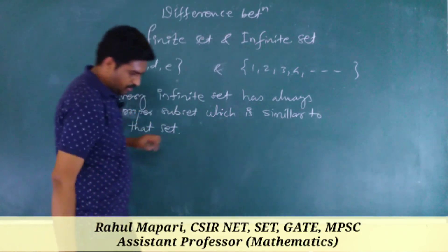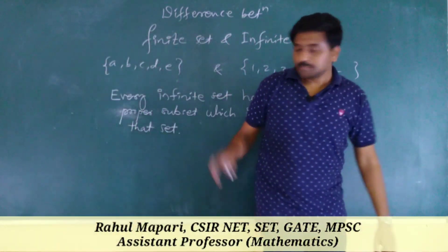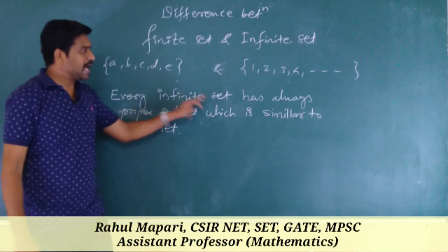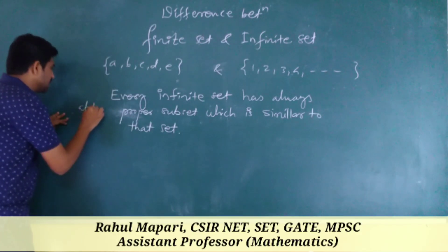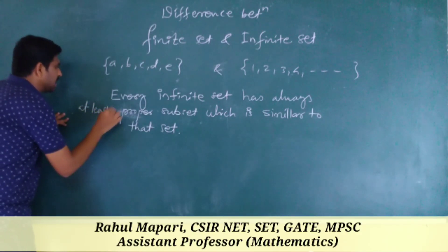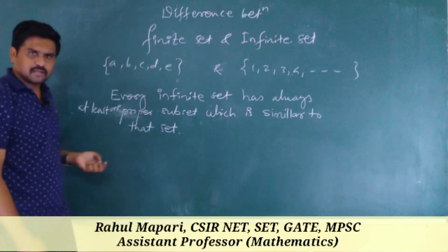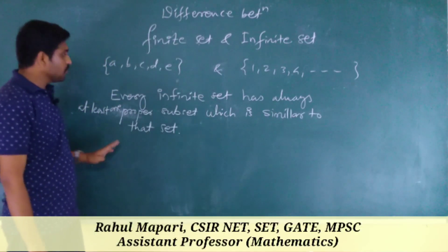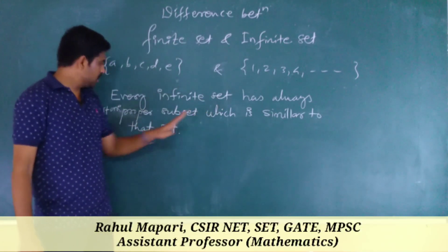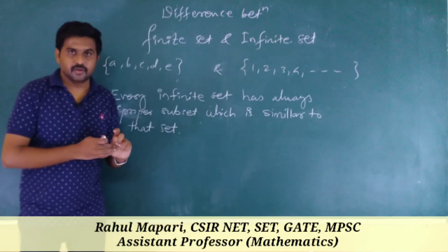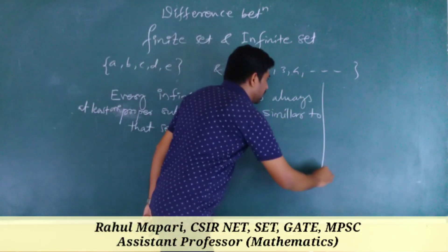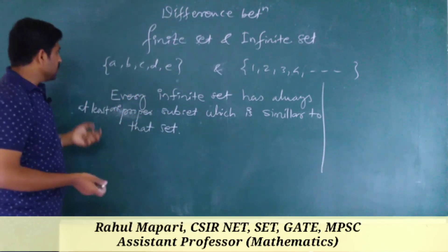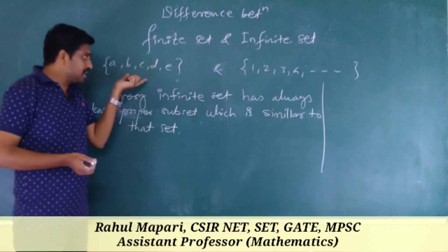This is the main difference between finite sets and infinite sets, because this statement is not true for finite sets. Every infinite set has always at least one proper subset — maybe more than one, but at least one — which is similar to that set itself. In a finite set, this property does not hold, because we cannot say the proper subset of a finite set is similar to that set.